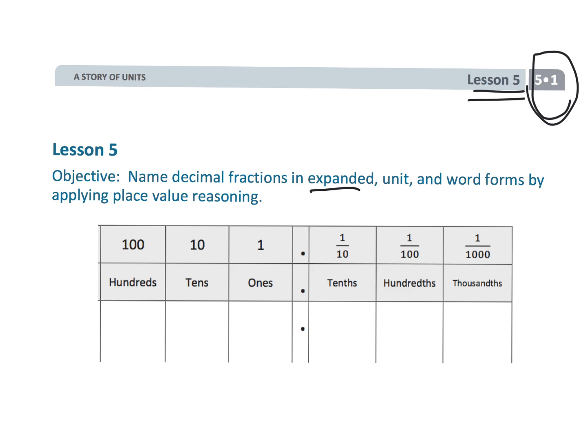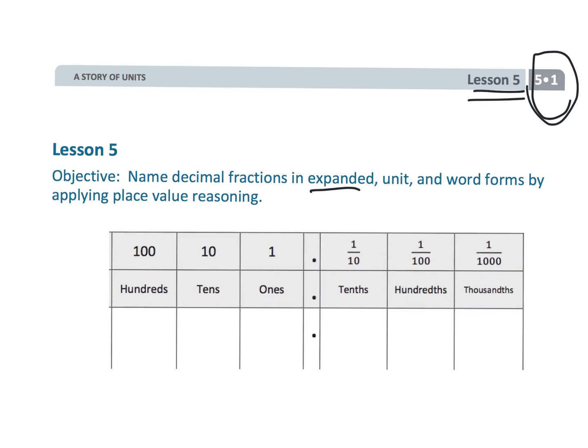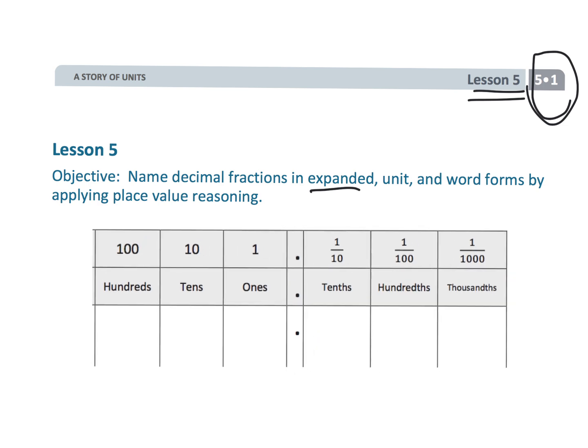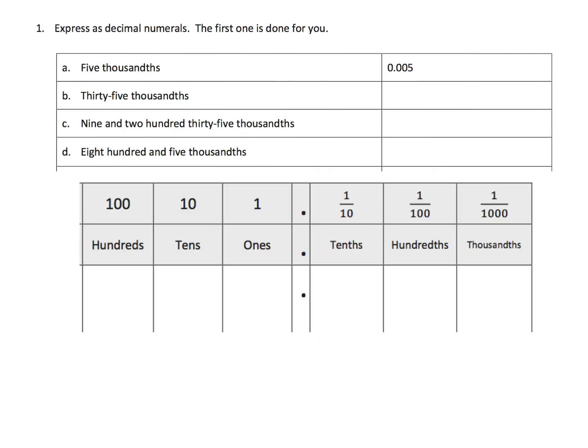GLAD strategies say: put it on the wall and allow the students to walk up to that wall and touch the chart as well, so that they can really own this and really understand it. So let's get started. The first thing it says is express as decimal numerals. The first one's done for you. The idea is we're going to be using this place value chart in order to take the words and turn them into a decimal.